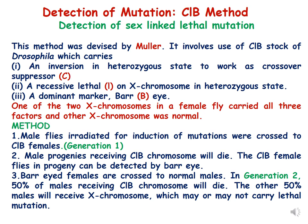The CLB stock taken by Mueller had female Drosophila that were heterozygous for this X chromosome — one of the X chromosomes carried all three genes: capital C, small L, and capital B, and the other was normal.